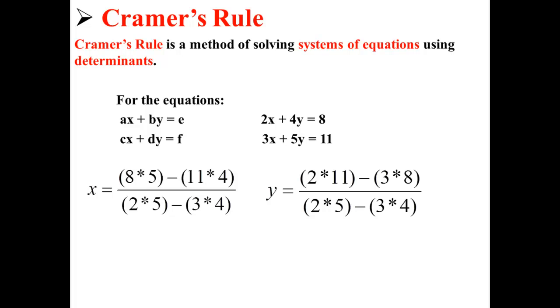So x is equal to 8 times 5 minus 11 times 4 divided by 2 times 5 minus 3 times 4, and y is equal to 2 times 11 minus 3 times 8 divided by 2 times 5 minus 3 times 4.